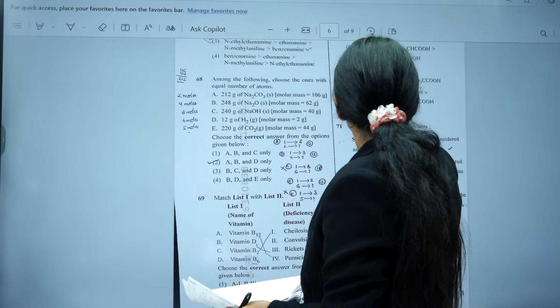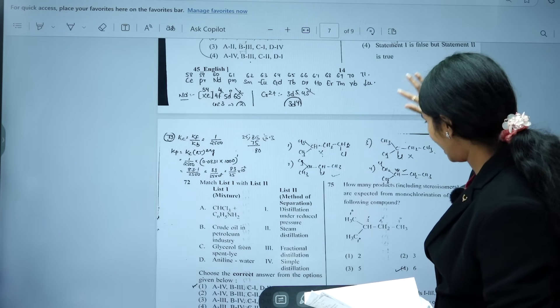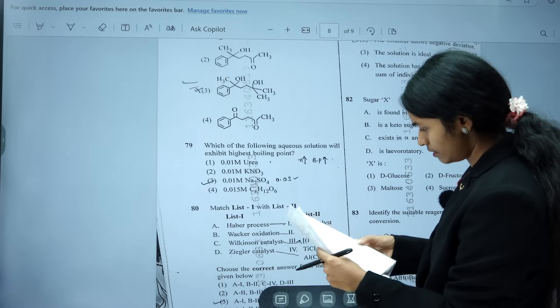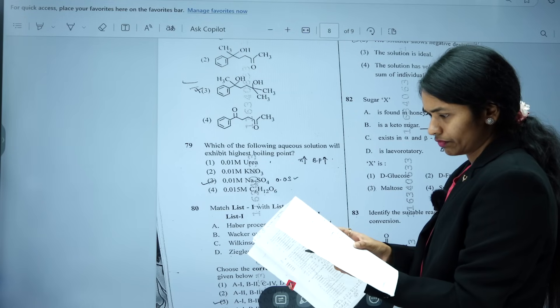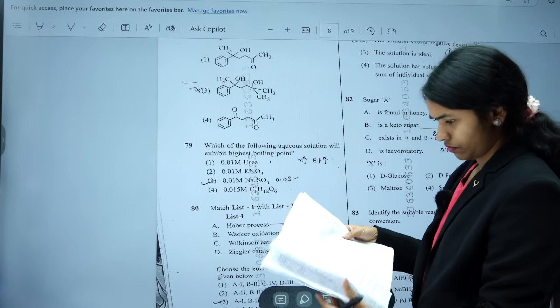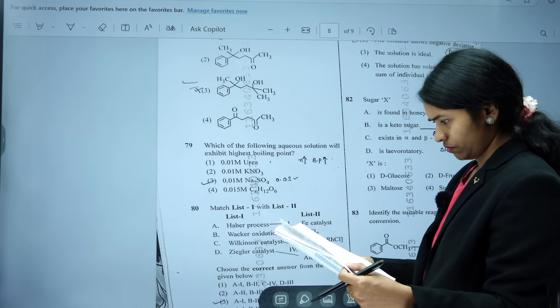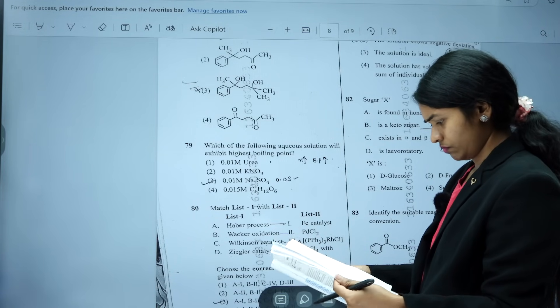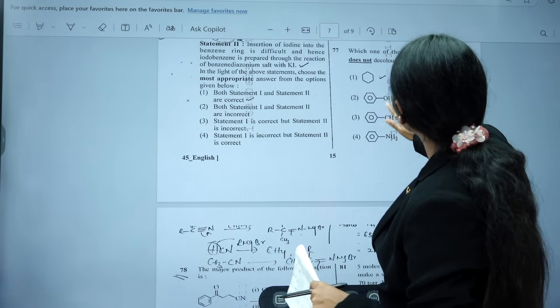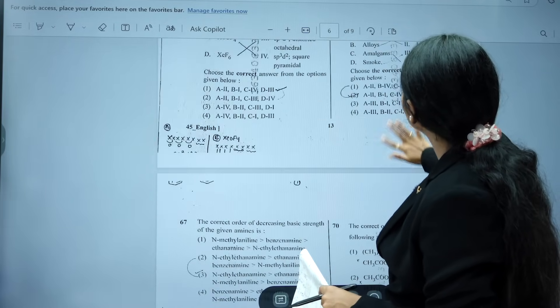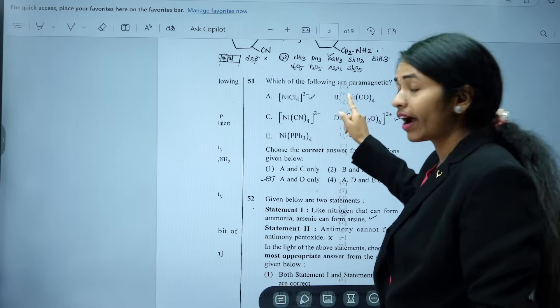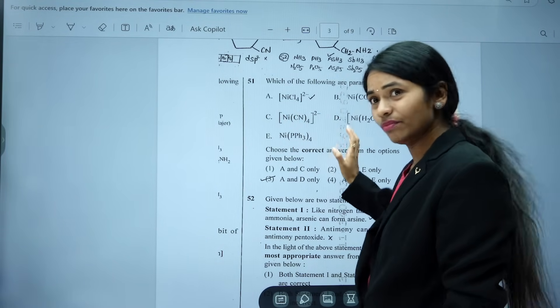Next one, this one also, this is electronic configuration, okay, you will write it. Next, one more question, I want to show you. Question number 51 is regarding, question number 51. So, you have to find the paramagnetism for A, B, C, D, E, okay.